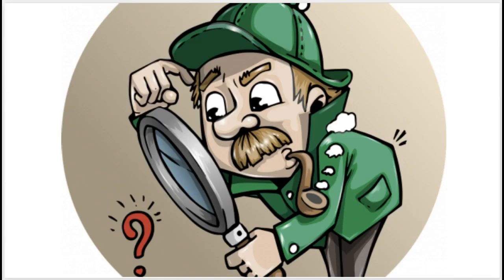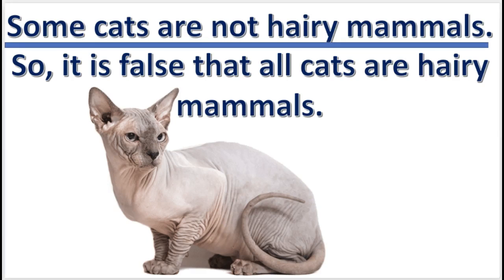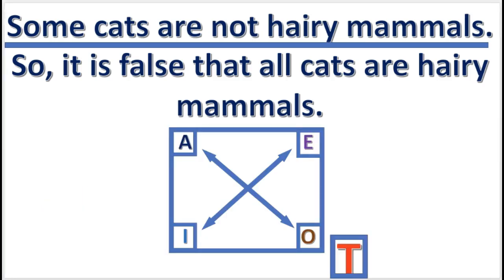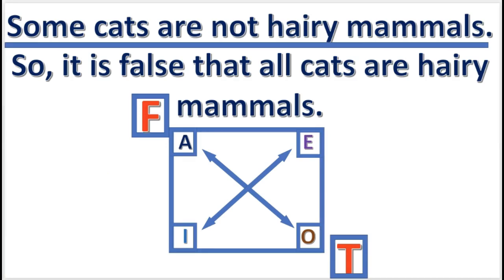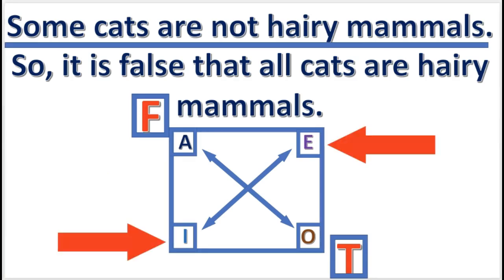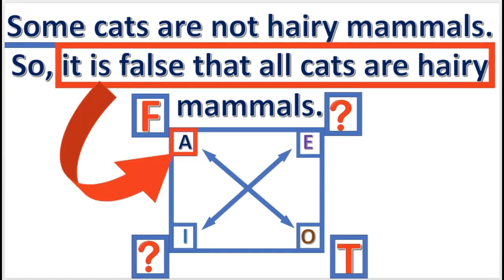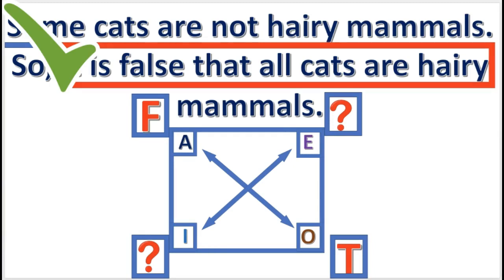Very good job on those practice problems. Now let's use the modern square of opposition to test some inferences. We'll check to see if the inferences are valid. We first begin by assuming that the premise is true. Since the premise is an O proposition, we will enter a T beneath the O in the square. Next, since O is true, we know that A is necessarily false, so we enter an F above the A in the square. Since no other inferences are possible, the E and I propositions have undetermined truth value. Finally, we check the conclusion. The conclusion claims that the A proposition is false. As we check the square, we see that indeed A is false. The conclusion of the inference is true, so the inference is valid.